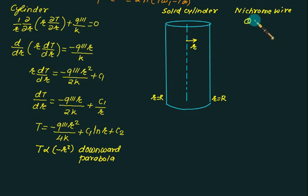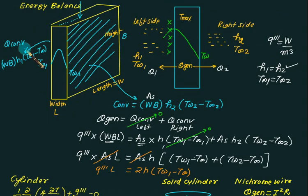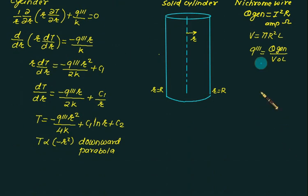We have q generation equals to i square r where r is electrical resistance in ohm and current in ampere. Unit of this quantity is watts. Volume of the cylinder is pi r square into L. So suppose this data is given to you, we can find out q triple dash as q generation divided by volume. Now remember we have only one wall in the case of cylinder. In slab we have two different walls but in cylinder we have only one wall.